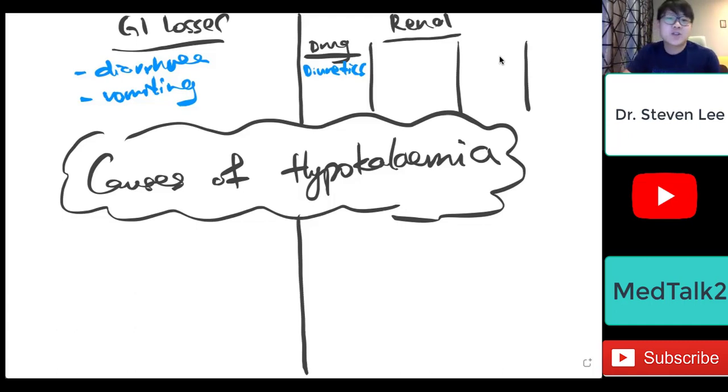Now the second drug that we can actually think about is the beta-2 agonist. Beta-2 agonist that we use to treat asthma or COPD. So this kind of drugs, for example, like salbutamol, are beta-2 agonist. They can also cause hypokalemia.